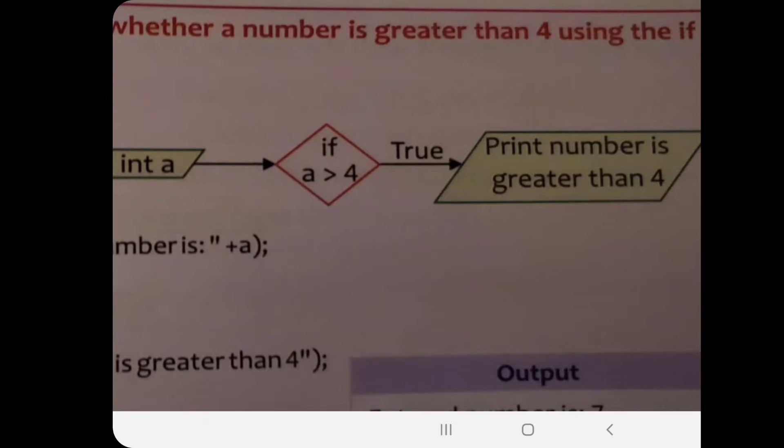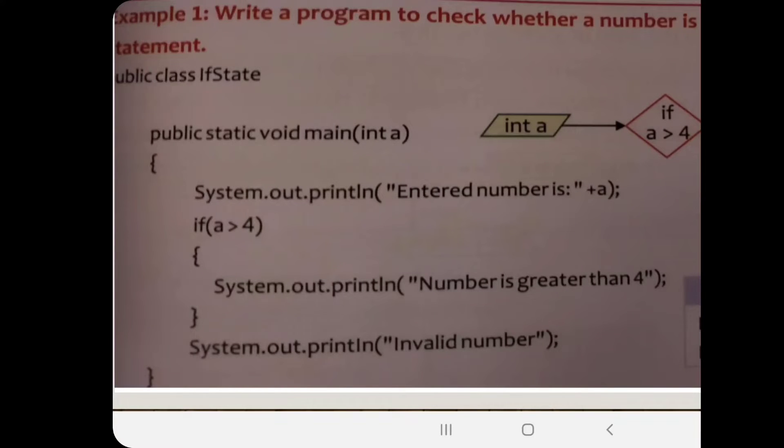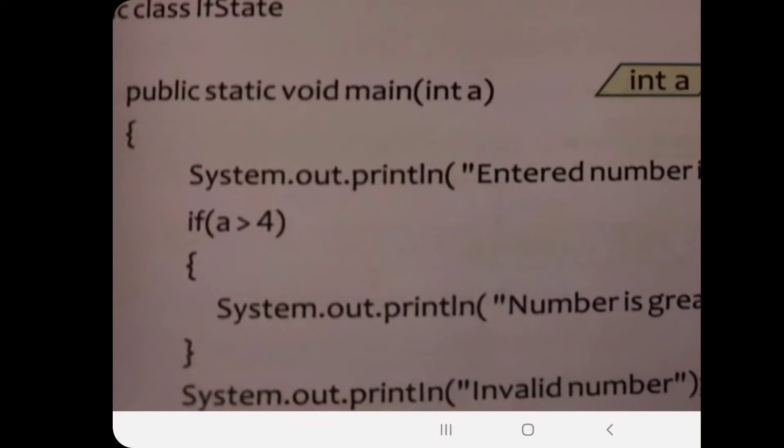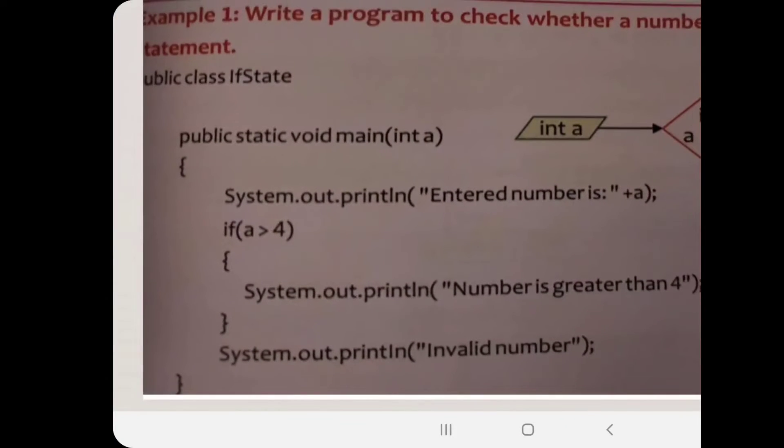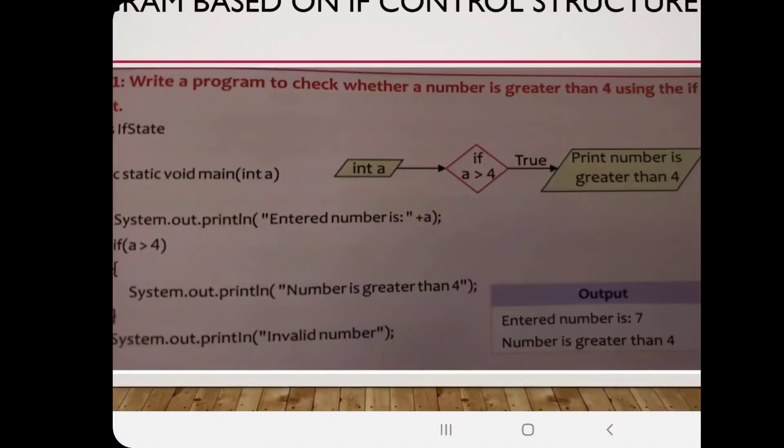How to write this program? Class, public class if statement. You can write public class and any name like program a1 or p1, p2. Public static void main, int a. Then system.out.println enter a number, which is a. We take a as a number which has to be checked: is it greater than four or not? Then we took if statement and we check a is greater than four. If this condition goes true, the output will come: number is greater than four. Otherwise, invalid number. This is all about a general if statement. This is too easy to do.